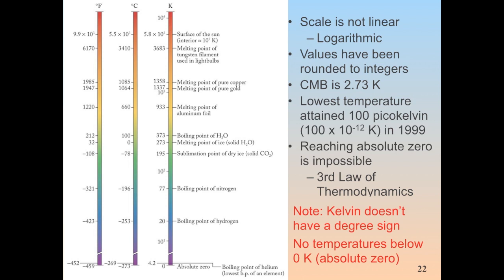We have a comparison between the three temperature scales — Fahrenheit, Celsius, and Kelvin. The scale is not linear; it is in fact logarithmic. We're going from about minus 459 Fahrenheit all the way up to nearly 10,000 degrees. Absolute zero is the lowest possible temperature we can ever have; at that point all molecular and atomic motion ceases, so you can never have a negative Kelvin. Absolute zero is negative 273.15 degrees Celsius and minus 459 degrees Fahrenheit.